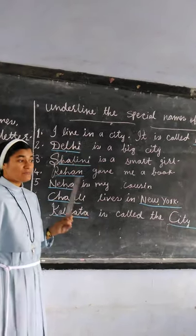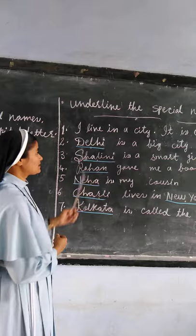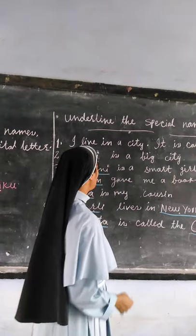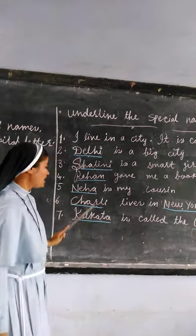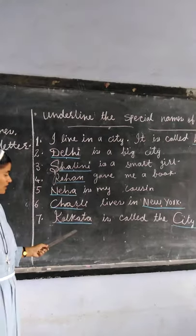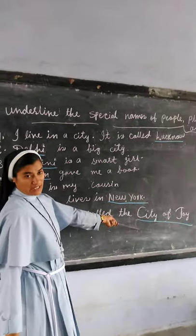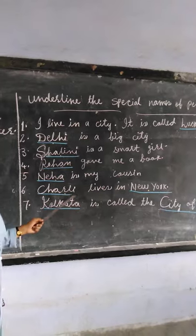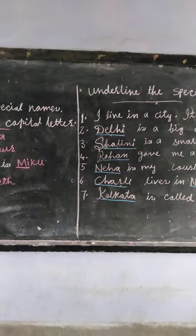As you know, special names begin with a capital letter. The special names from our exercise are: Delhi, Shalini, Rohan, Neha, Charlie, New York, Kolkata, and city of joy. These are all the special names. That's all. Thank you.